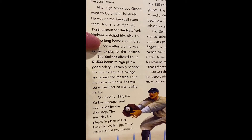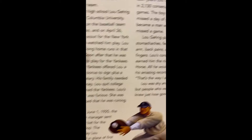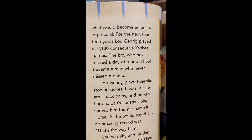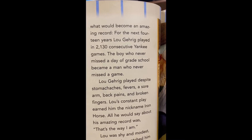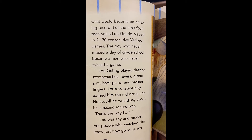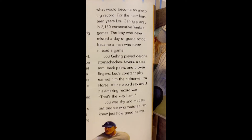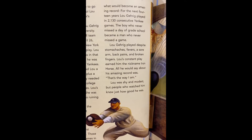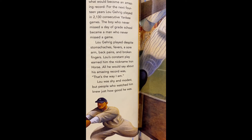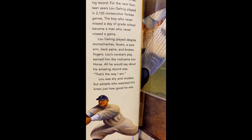But on June 1st, 1925, the Yankee manager sent Lou to bat for the shortstop. The next day, Lou played in place of first baseman Wally Pitt — those are the first two games in what would become an amazing record. For the next 14 years, Lou Gehrig played in 2,130 consecutive Yankee games. Consecutive means in a row. The boy who never missed a day of grade school became a man who never missed a game. Lou Gehrig played despite stomach aches and fevers, a sore arm, back pains, and broken fingers. His constant play earned him the nickname Iron Horse. All he would say about his amazing record was, 'Well, that's the way I am.' Lou was shy and modest, but people who watched him knew just how good he was.